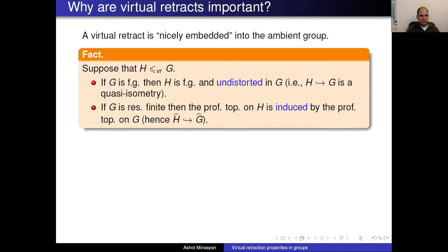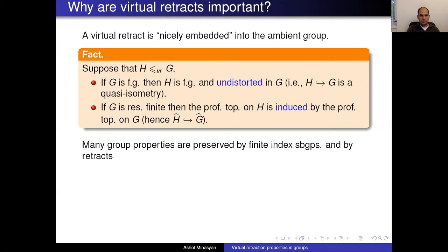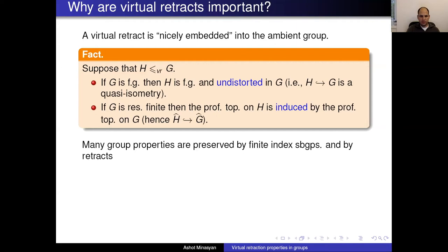Another property: if G is residually finite, then the profinite topology on any virtual retract H is induced by the profinite topology on G — every closed set of H is also closed in G. This implies the profinite completion of H embeds naturally into the profinite completion of G. So if you want to prove something about a subgroup, knowing it's a virtual retract can be very useful.